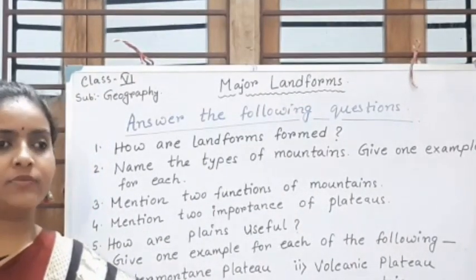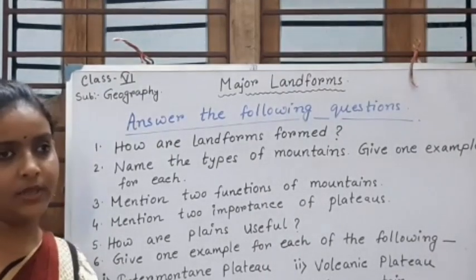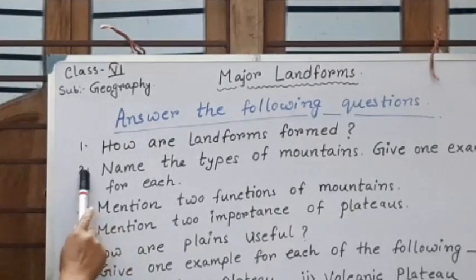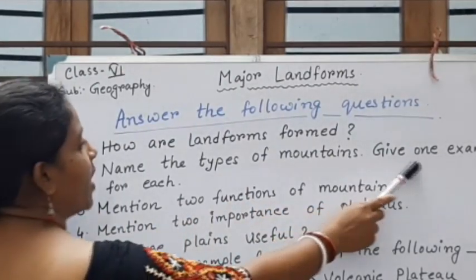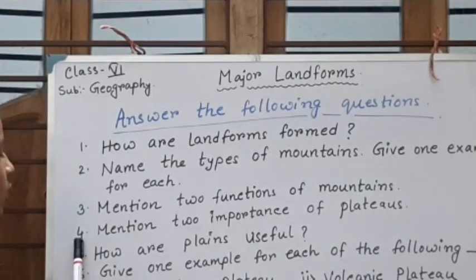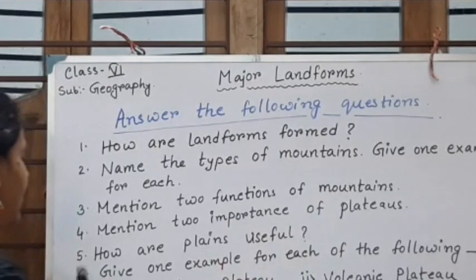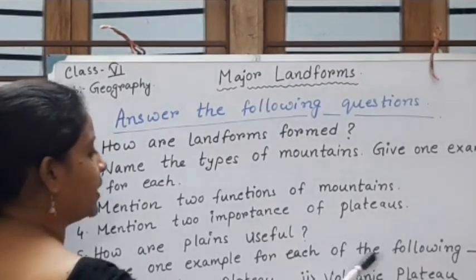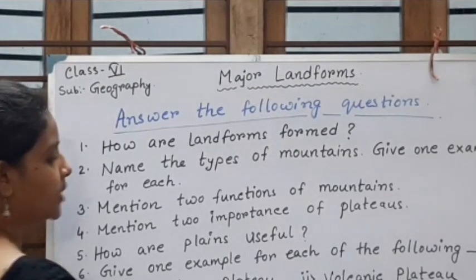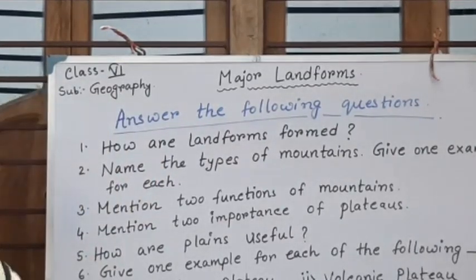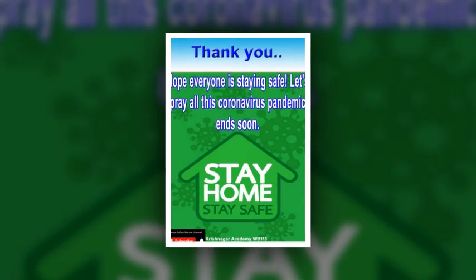We have come to the end of this chapter. Here are some questions you can answer at home: How are landforms formed? Name the types of mountains and give one example for each. Mention two functions of mountains. Mention two importances of plateaus. How are plains formed? Give one example for each of the following: intermountain plateau, volcanic plateau, plain, island, and mountain. Thank you. Stay home, stay safe, stay calm.